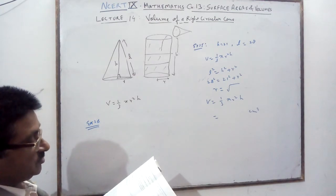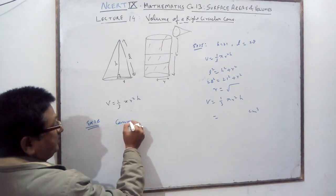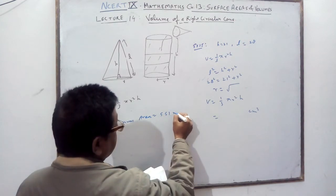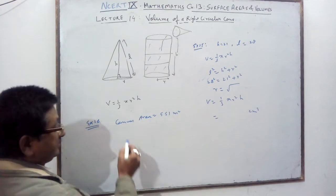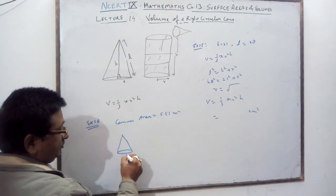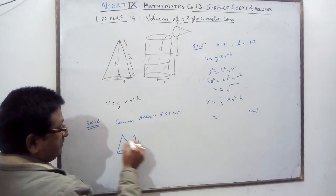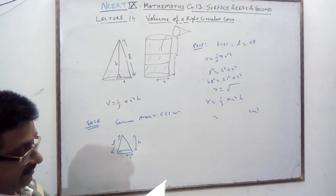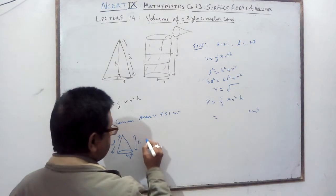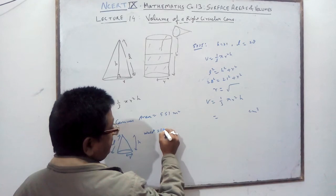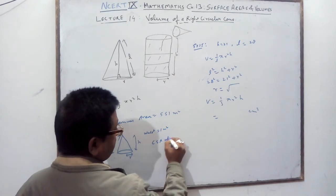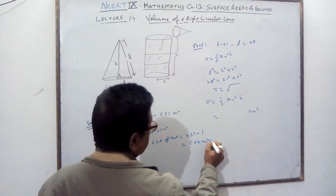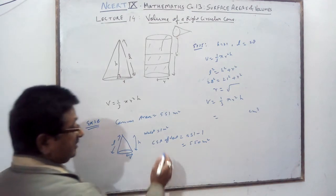Monica has a piece of canvas whose area is 551 square meters. She uses it to make a conical tent. Since 1 square meter is wasted in stitching and cutting, the CSA of the tent will be 551 minus 1 = 550 square meters of cloth. The CSA of the tent is πrl.